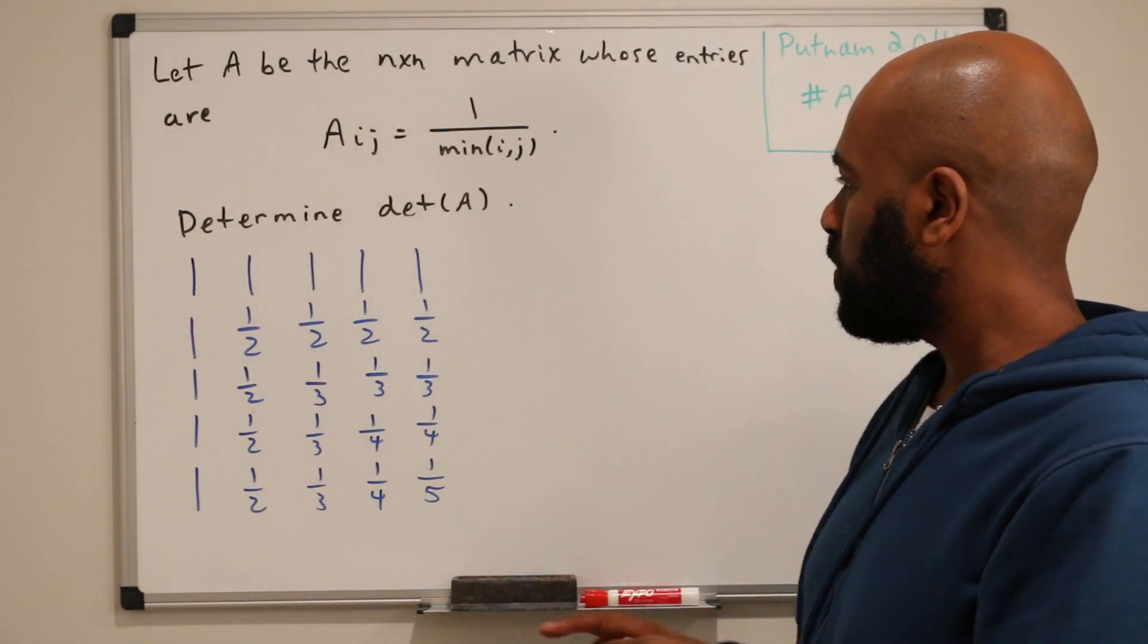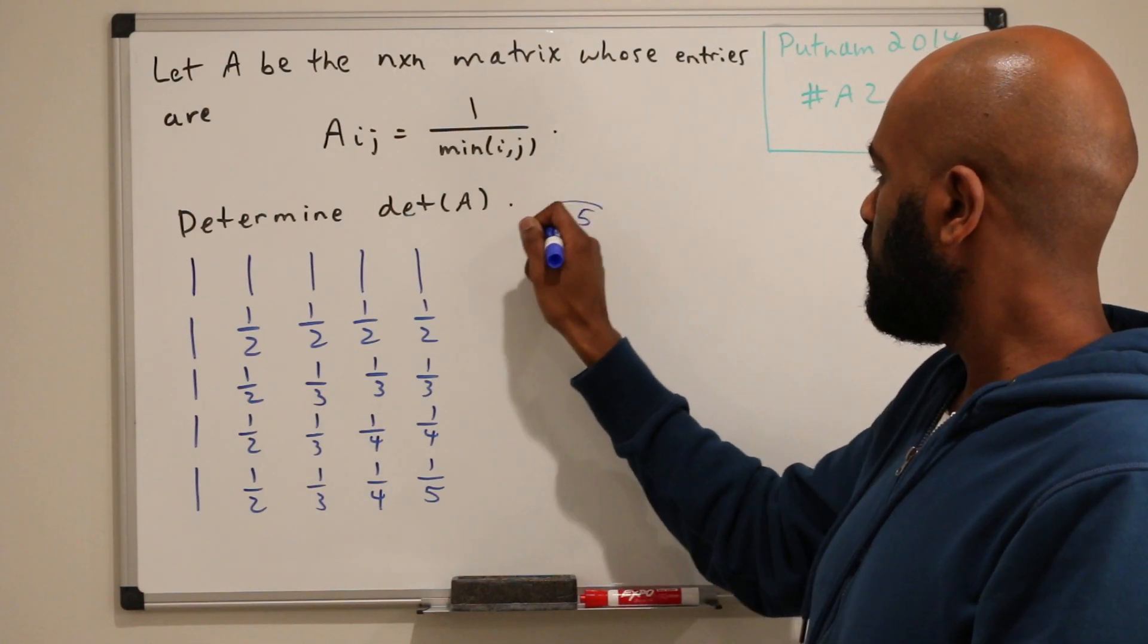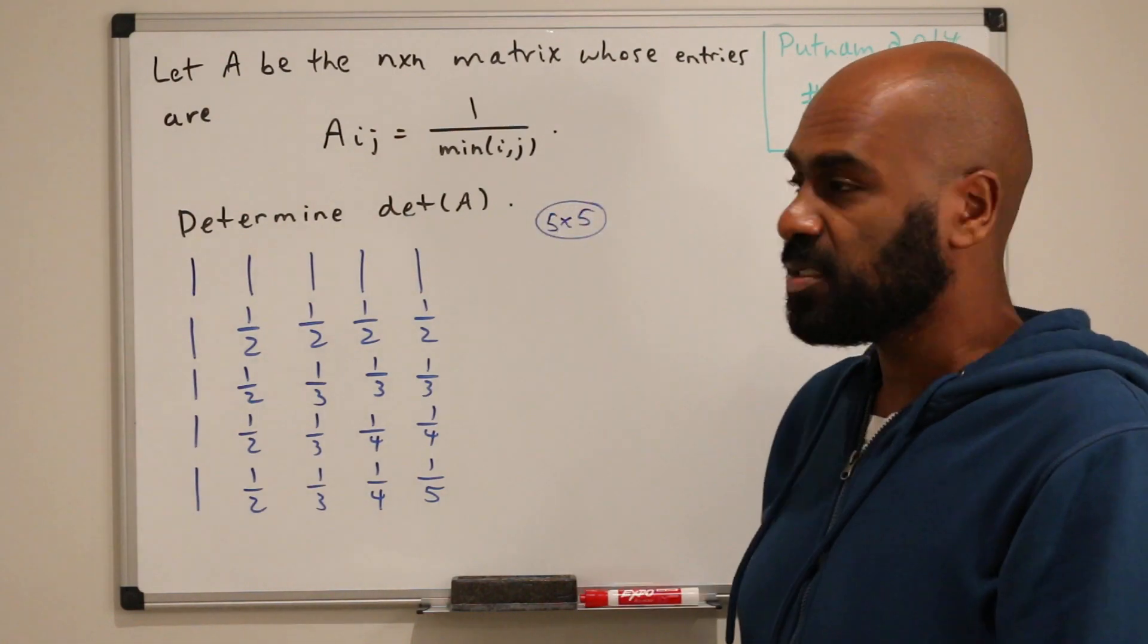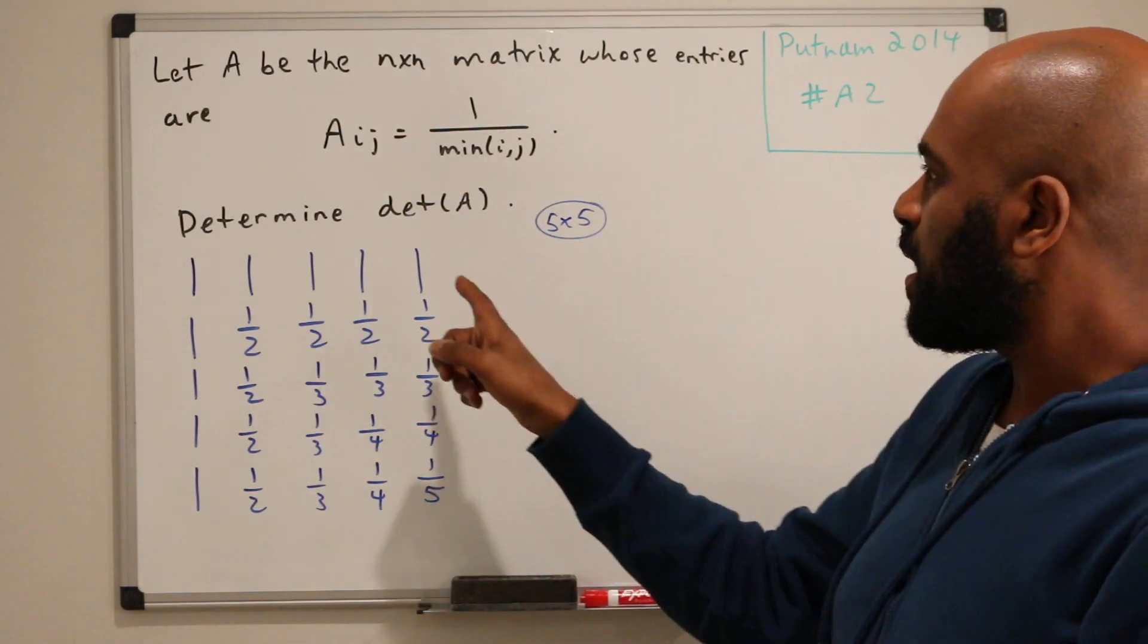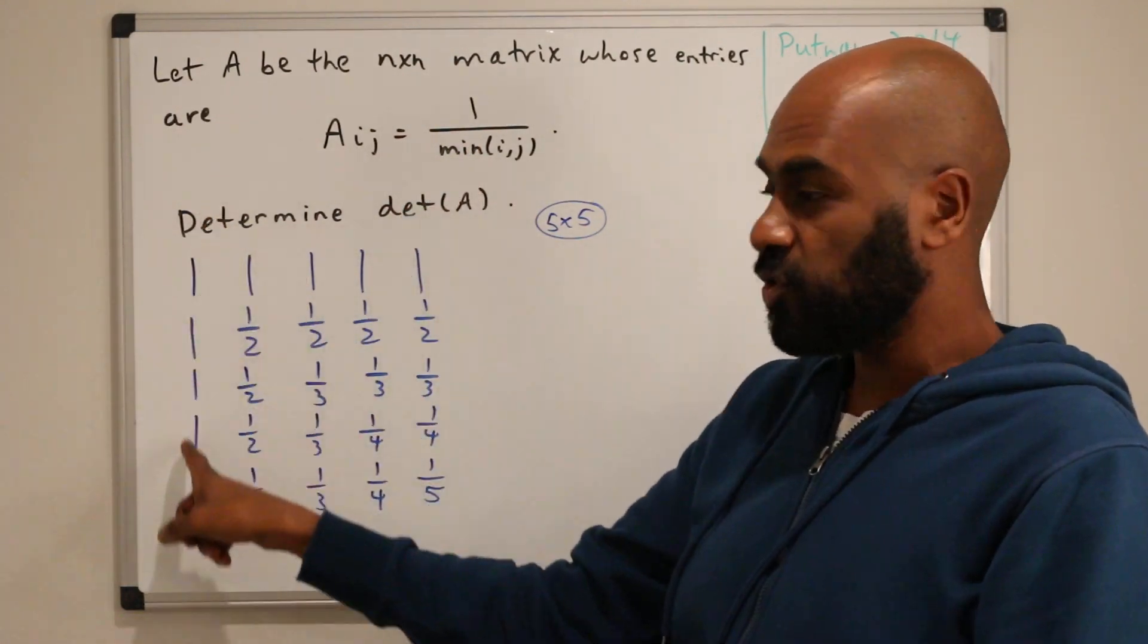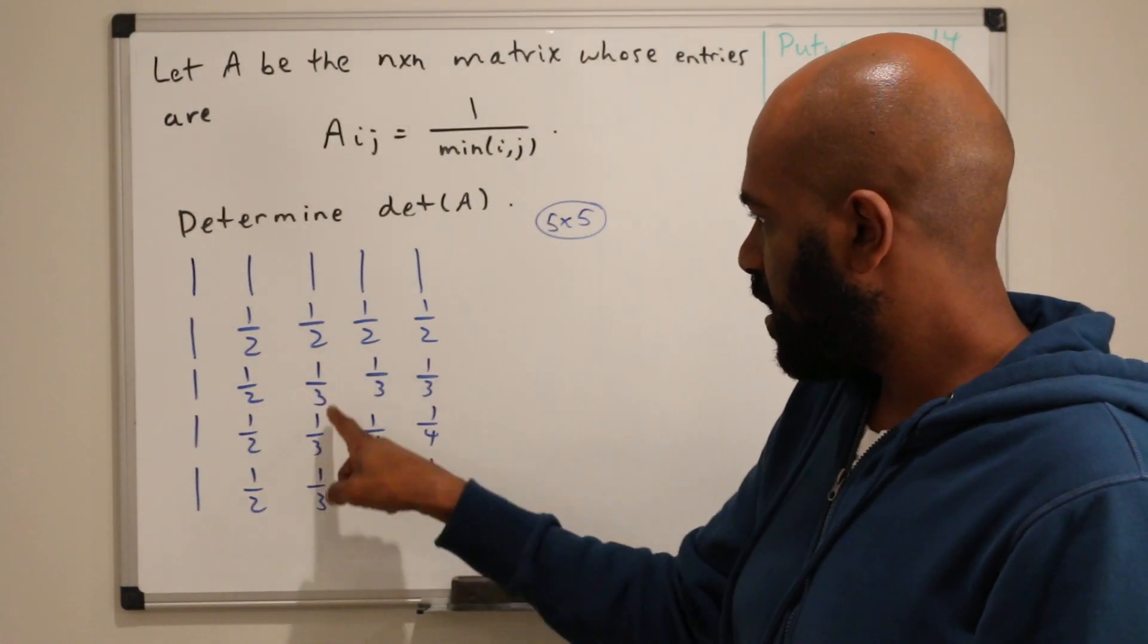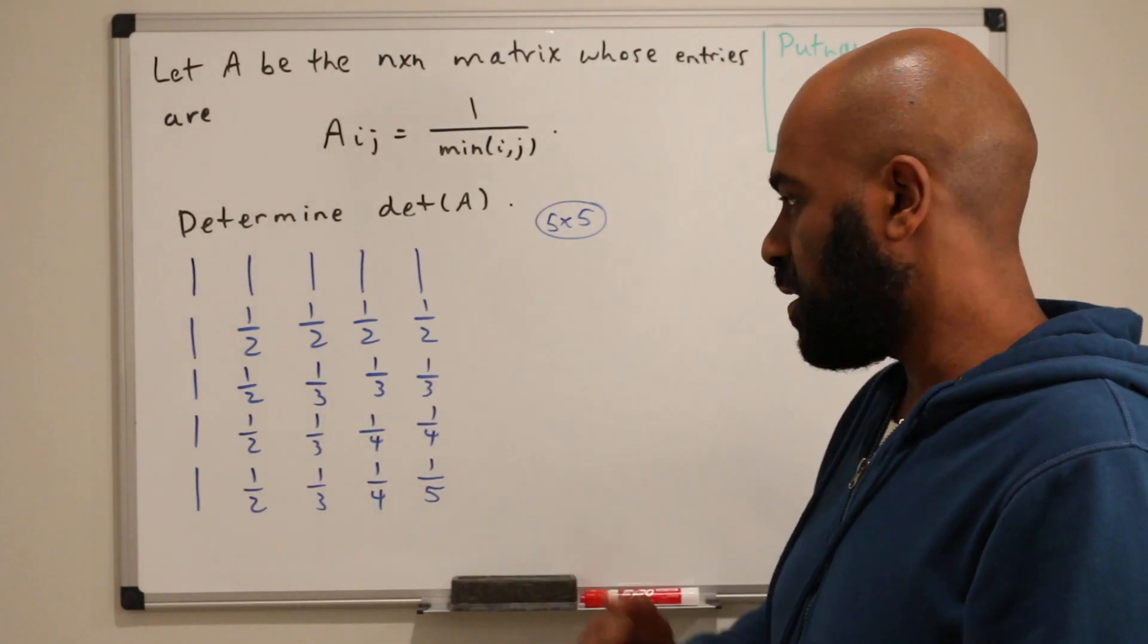So I wrote down this case where A is 5 by 5 and the matrix looks something like this. The minimum of 1 and anything is 1, so we'll get 1 over 1 in the first row and the first column. Then we'll get a half along this next hook here, then a third along here, a fourth, and then a fifth.